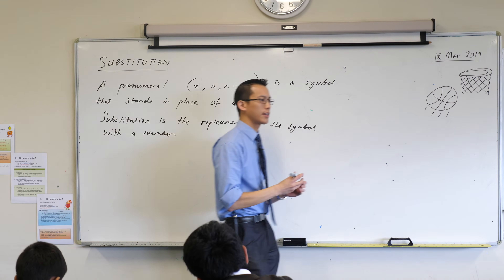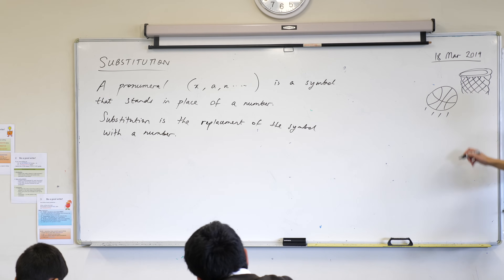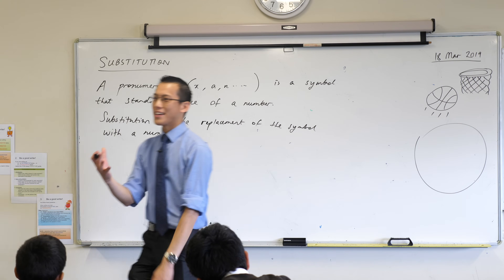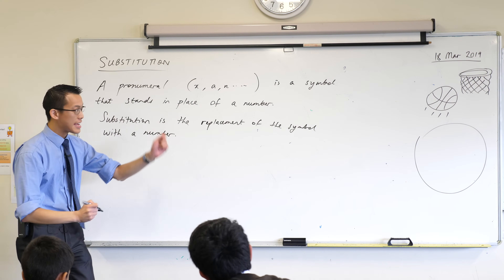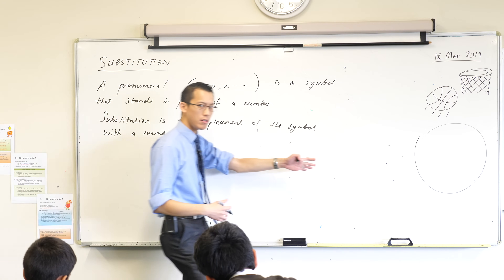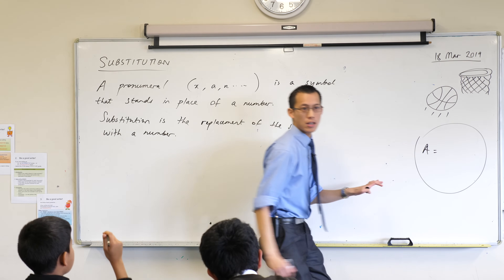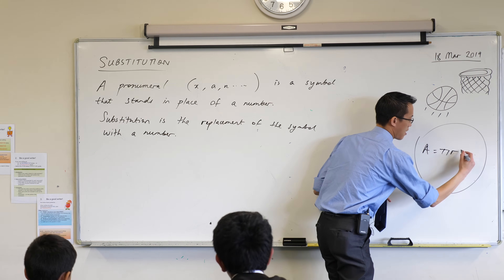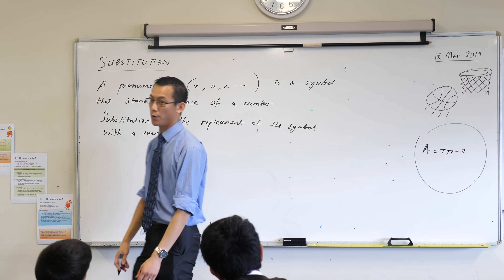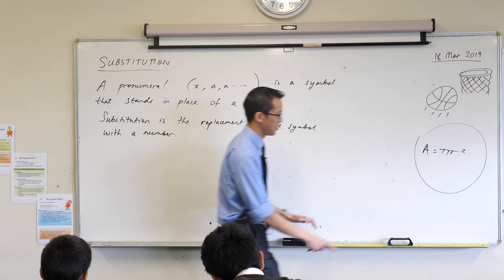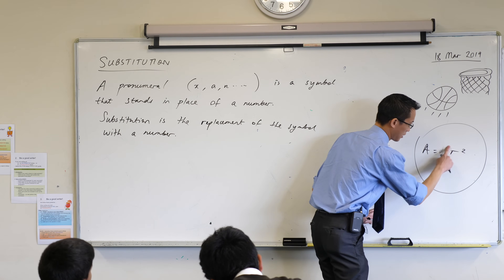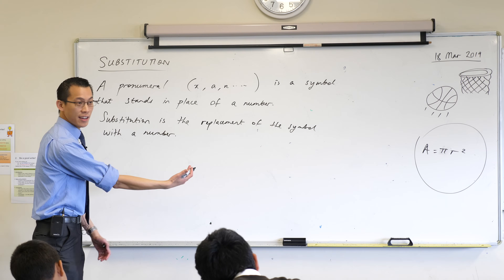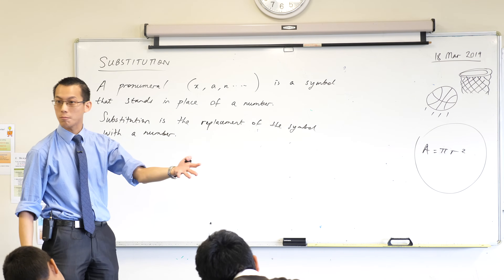Okay so let's think of a quick example of this. If you had a circle — and you guys learned last year the area of a circle — there's a formula for it. Does anyone remember what it was? Area equals pi r squared. Very good. So you can see we have three pronumerals in here: there's an A, and then there's the pi, and then there's an R.